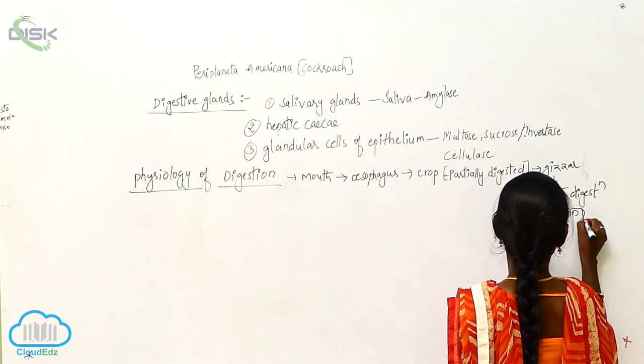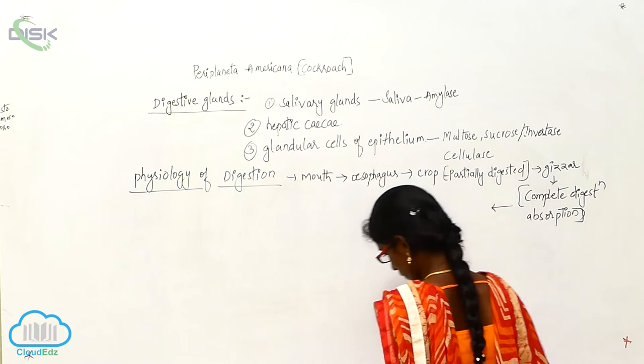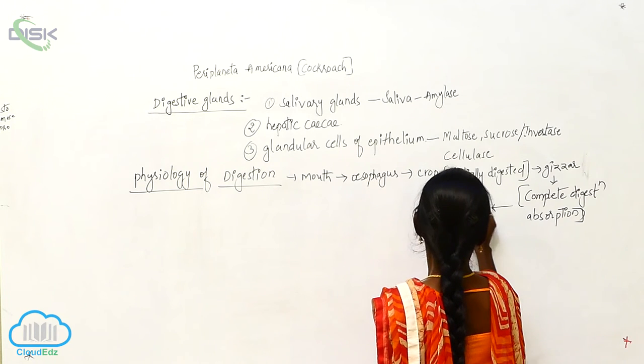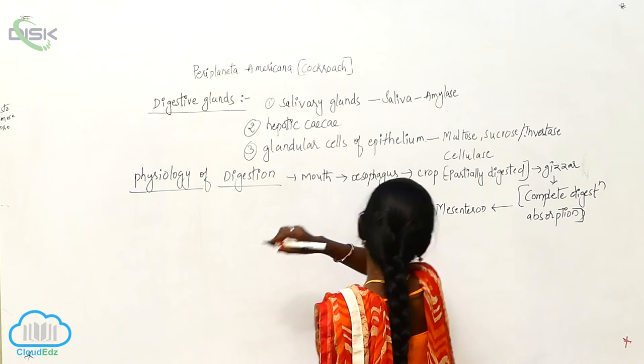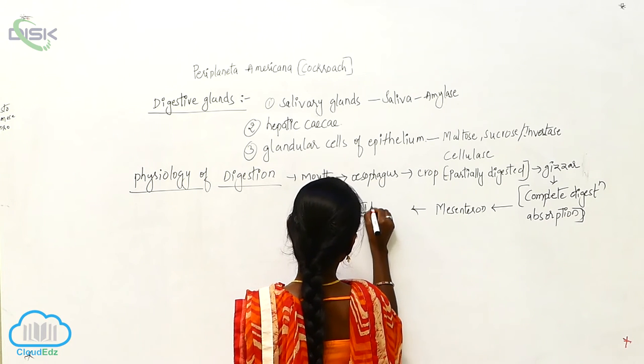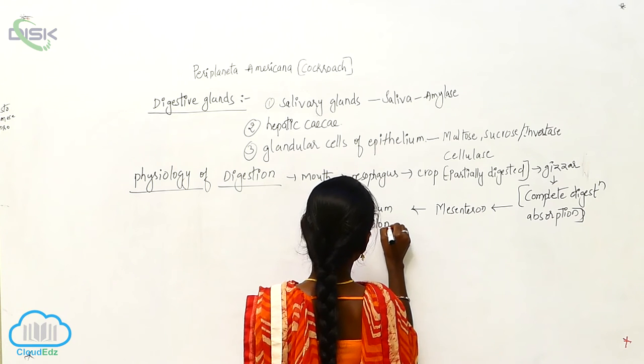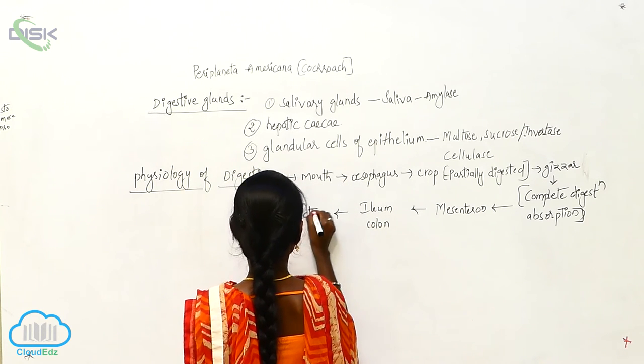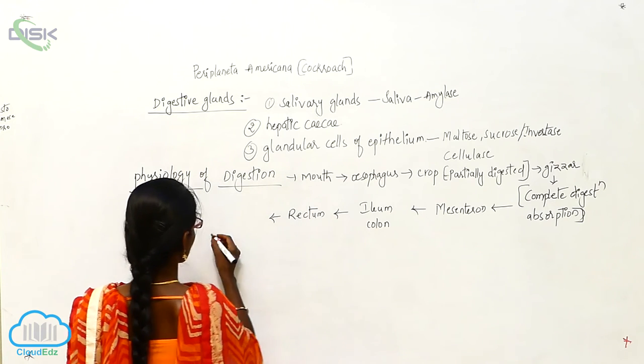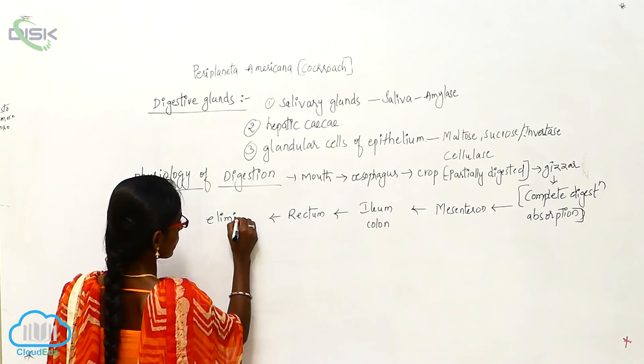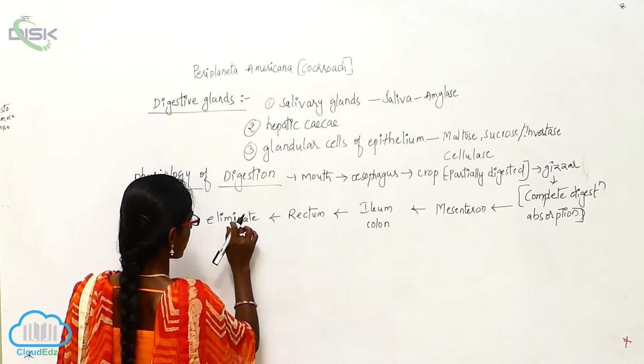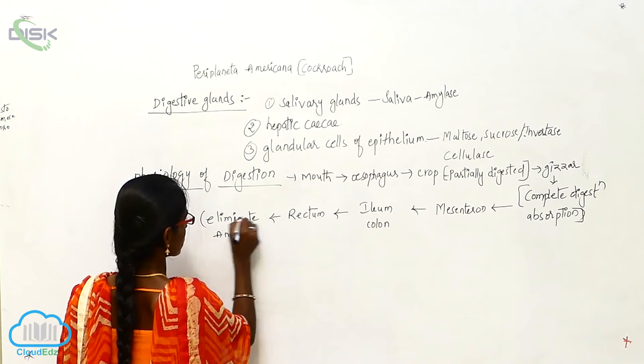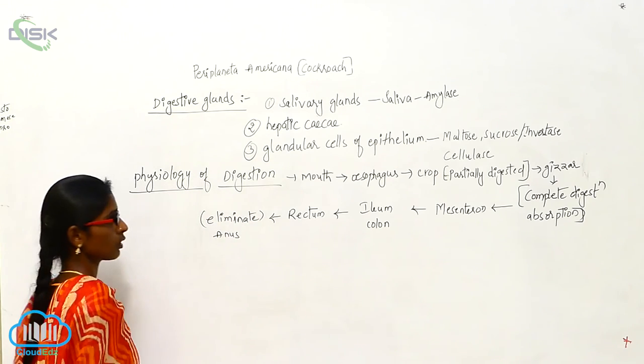Complete digestion and absorption. So from this, it will go to mesenteron. From this, it will go to ileum colon. It will go to rectum. After that it will eliminate from anus. So, this is the physiology of digestion.